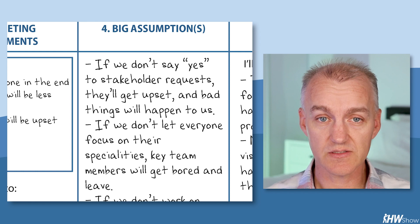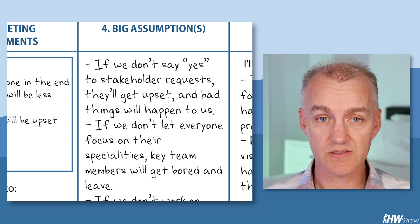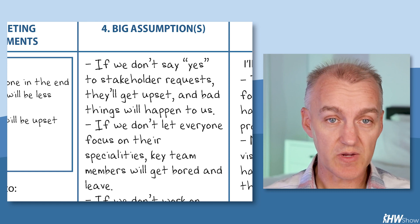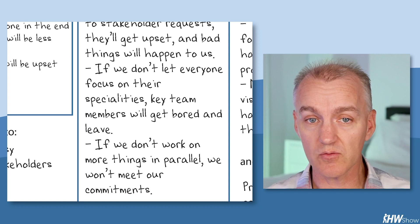So column four, what assumptions might be behind this? Maybe if we don't say yes to stakeholder requests, they'll get upset and bad things will happen to us. Maybe if we don't let everyone focus on their specialties, key team members will get bored and leave. Or if we don't work on more things in parallel, we won't meet our commitments.